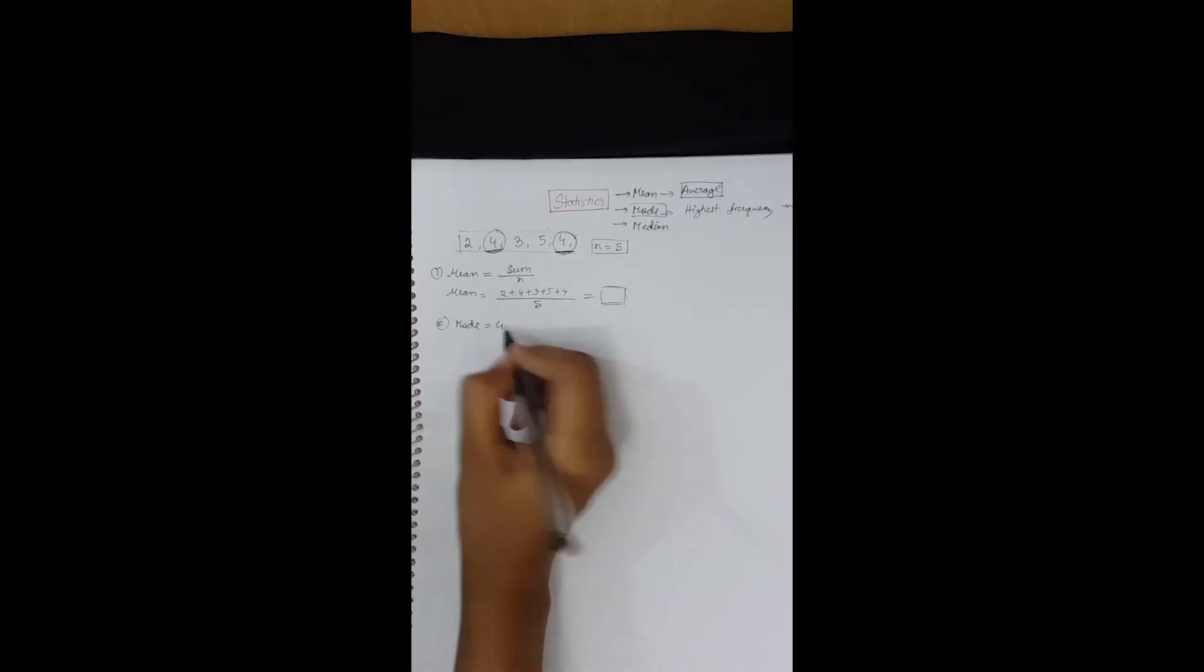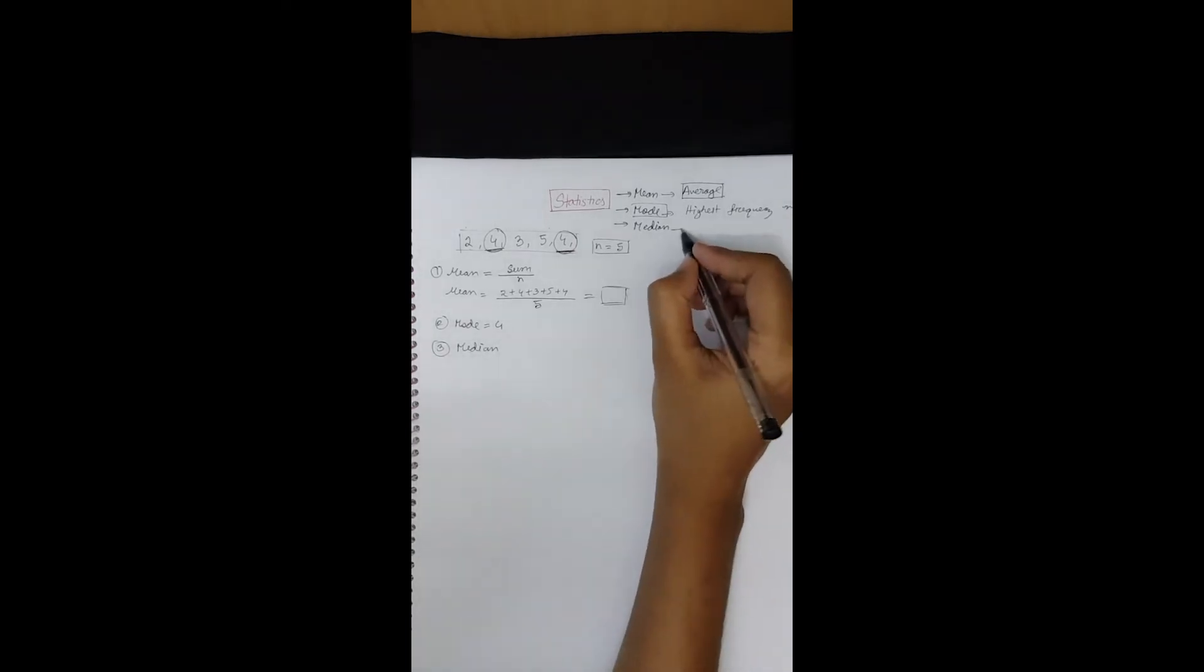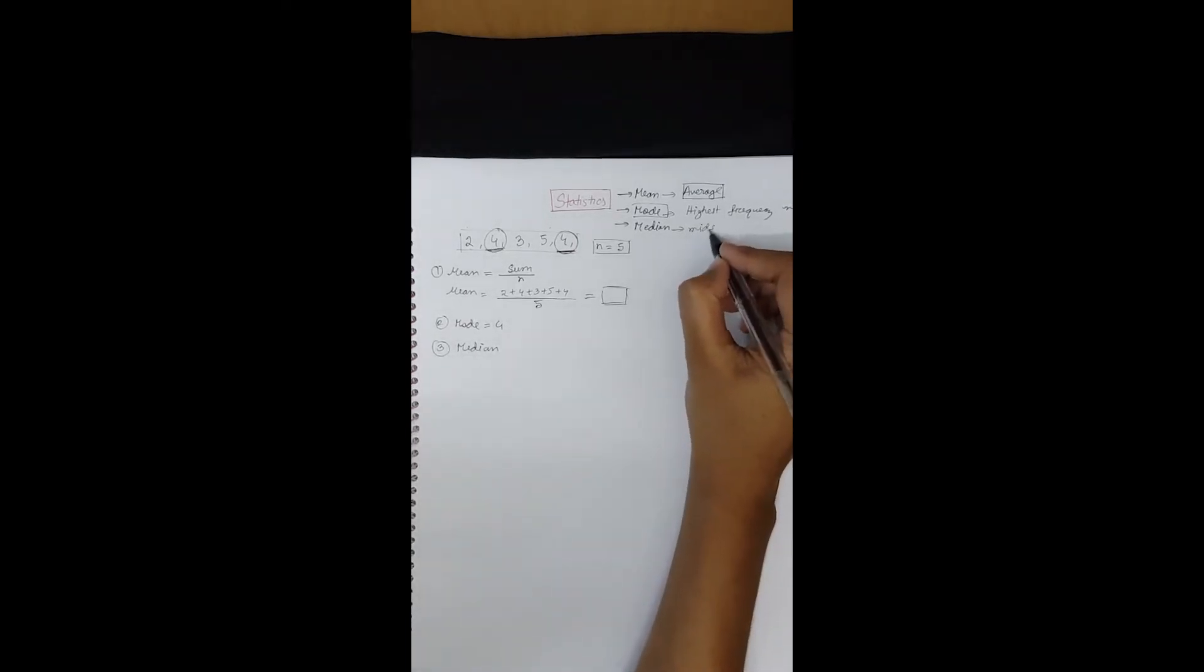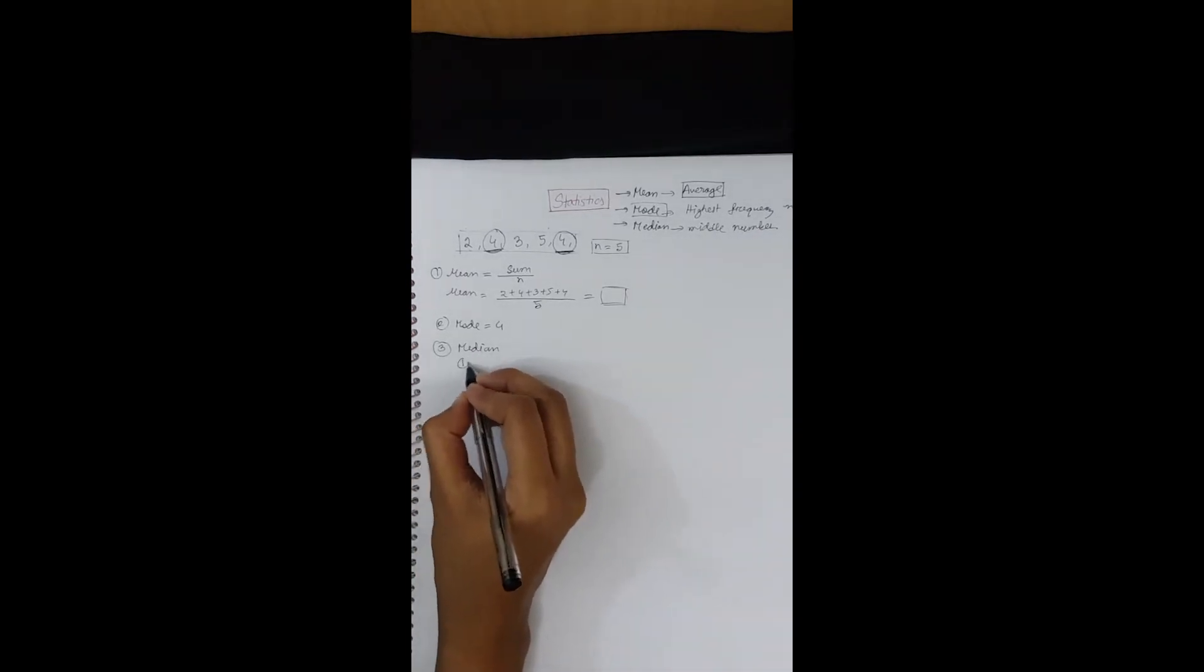Next comes the median. Median is basically the middle number. To find the median, we need to follow some steps. At first, you need to arrange all the numbers in ascending order.